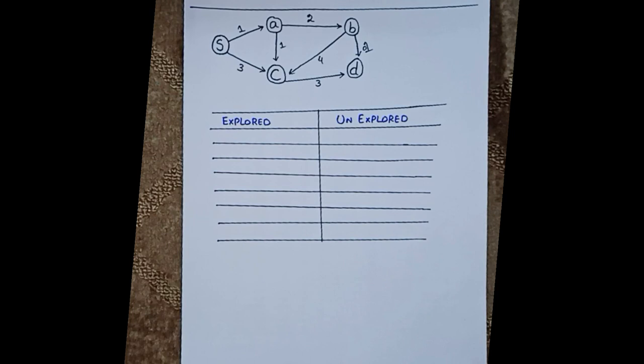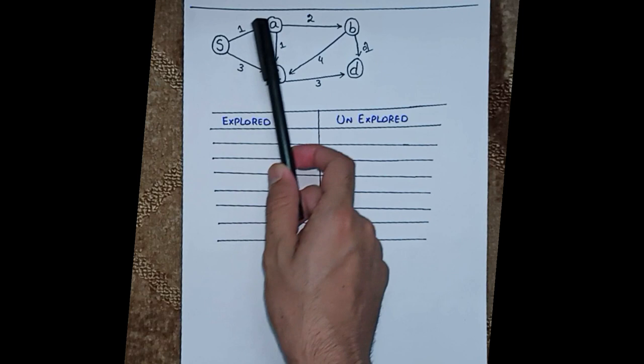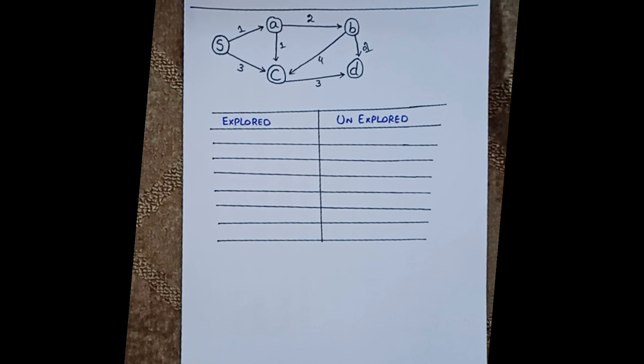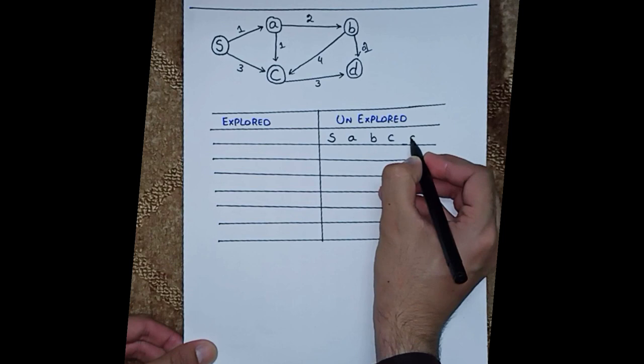On the right side we have unexplored vertices and on the left side we will write the explored vertices. These are the vertices: S, A, B, C, and D. So first, all vertices are unexplored, so I write all vertices — S, A, B, C, and D.